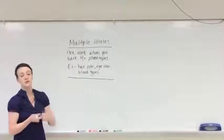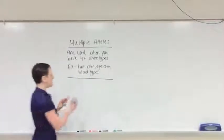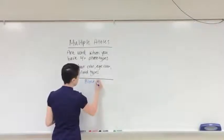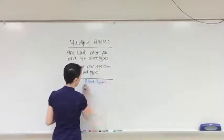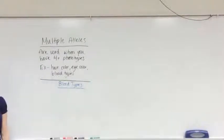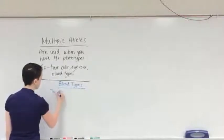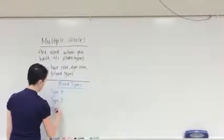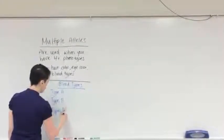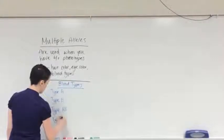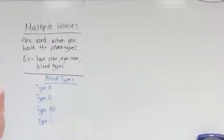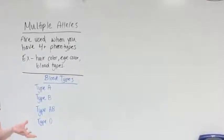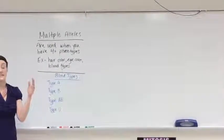Another special type of multiple alleles that we work with a lot are blood types. There are four blood types that people could be: type A, type B, type AB, or type O. What this means is that your blood cells have little flags on them — I like to call them flags — called antibodies.